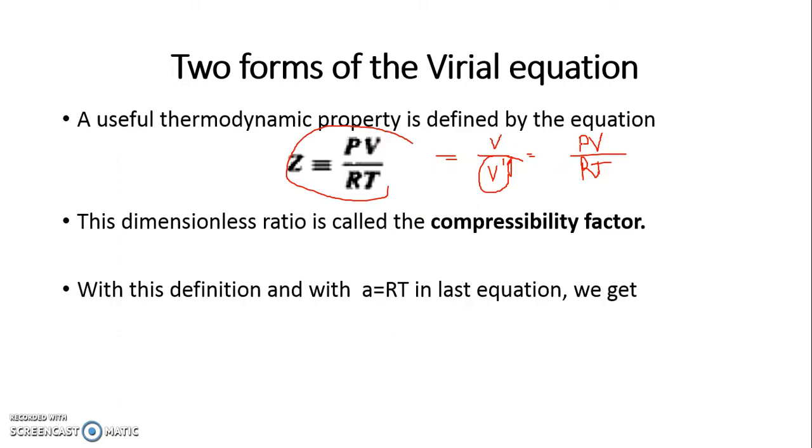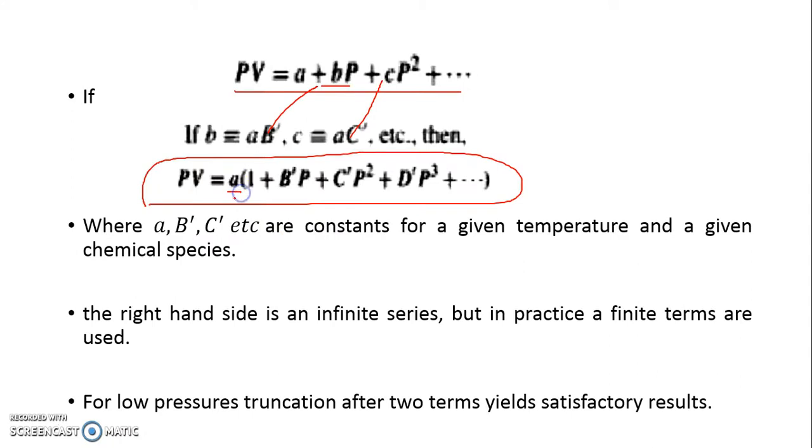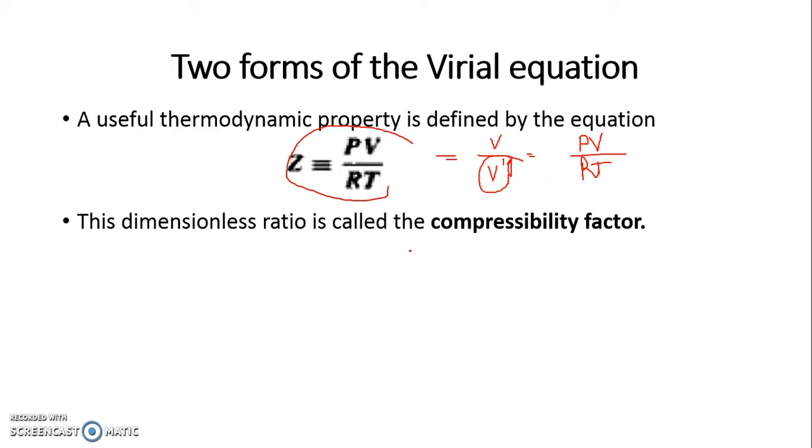This dimensionless ratio is called the compressibility factor and it gives you an idea about the deviation from ideal case behavior. With this definition and with A equal to RT in the previous equation, we get the virial equation. How do we arrive at A equal to RT? We need to have a look at that.